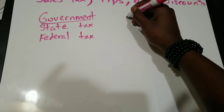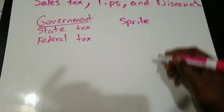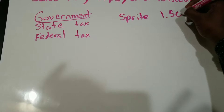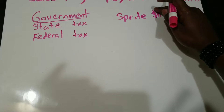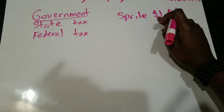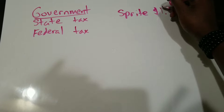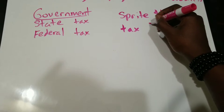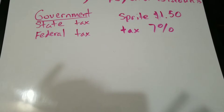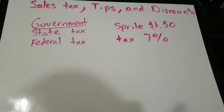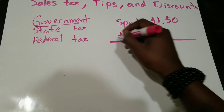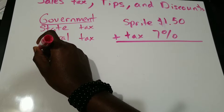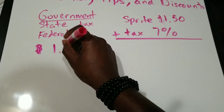So let's say you go to the store and you get a Sprite. The Sprite costs $1.50. In the state of Virginia, the tax is 7%. So what you would do is first find out what is the price — the price is $1.50.